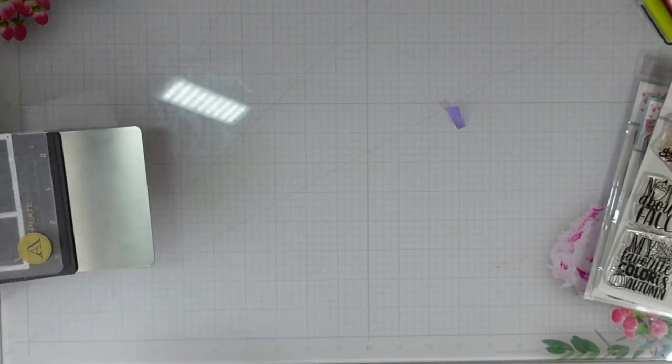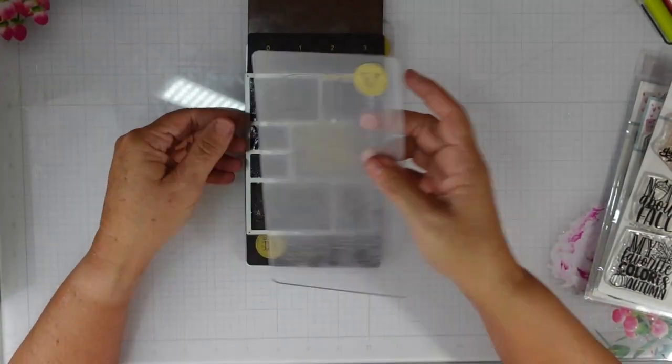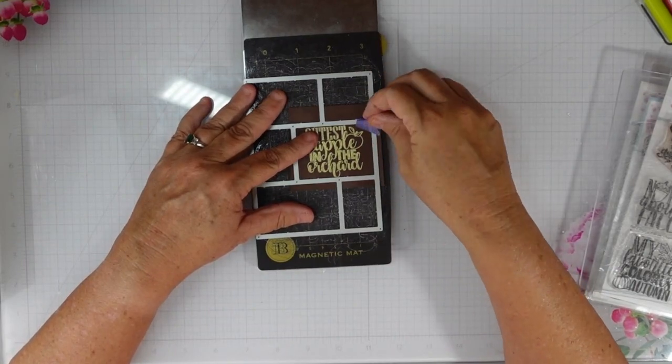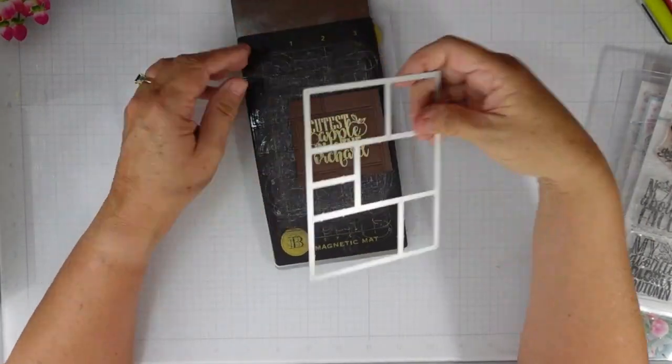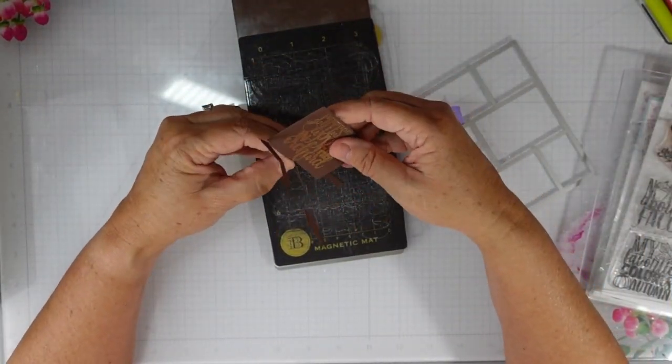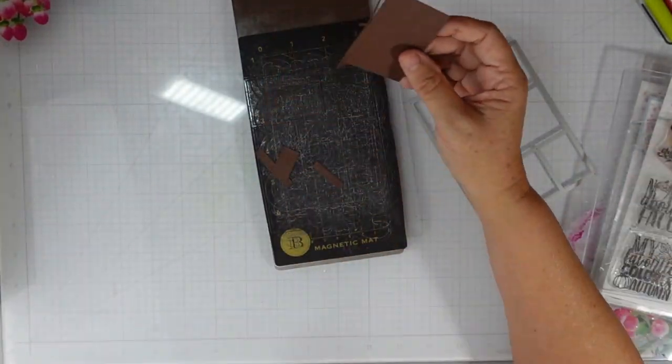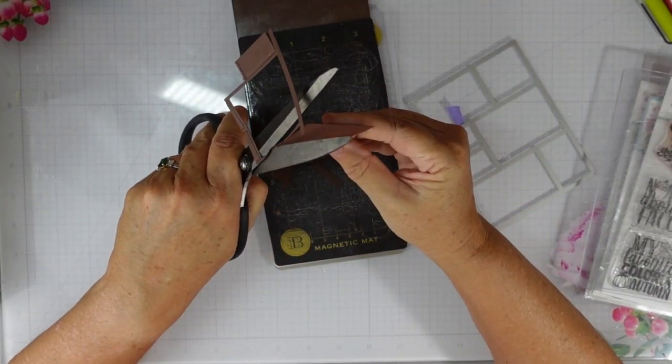I'm going to use that area of the divider to cut out my sentiment, which is going to be, I believe, the largest box, either the largest or the second to largest box.